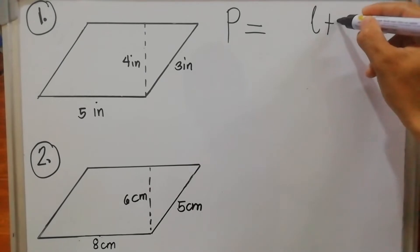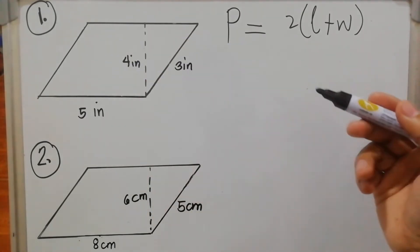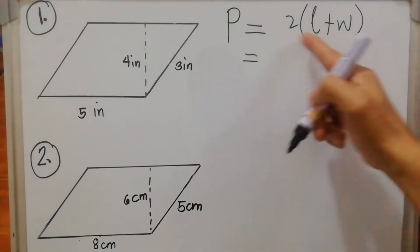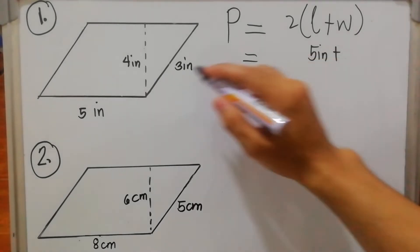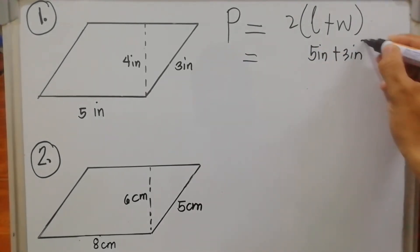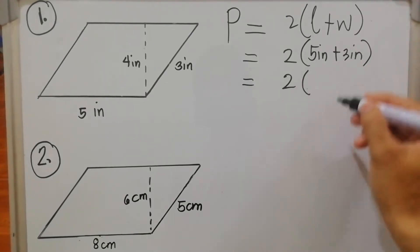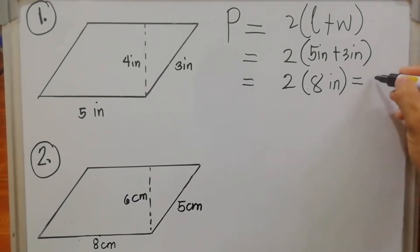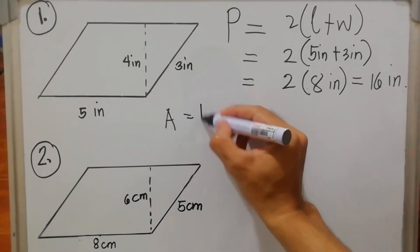Perimeter equals (length + width) × 2, since two opposite sides of a parallelogram are congruent. Length is five inches and width is three inches. So: (5 + 3) × 2 = 8 × 2 = 16 inches.